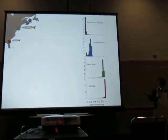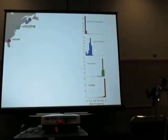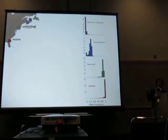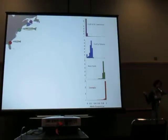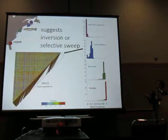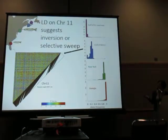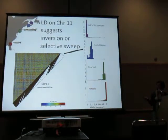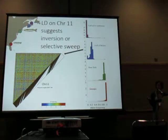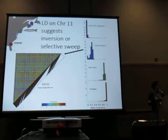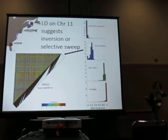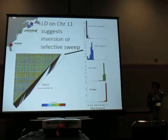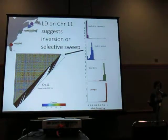Similarly, we don't have a lot of polymorphism in the southern and northern populations, but we do have some polymorphism in the Gulf of Maine that we can use to look for linkage disequilibrium on chromosome 11. We do see some elevated linkage disequilibrium, which may signal an inversion, though we also can't rule out something else like a selective sweep driving this pattern.